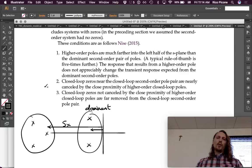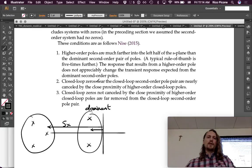Second condition is closed-loop zeros near the closed-loop second-order pole pair are nearly canceled by the close proximity of higher-order closed-loop poles. So, closed-loop zeros near the closed-loop second-order pole pair are nearly canceled by the closed proximity of higher-order closed-loop poles. So, if we had a zero here, this could screw things up for us. If you had a pole there, though, too, if it was close by, the net effect of those two, they nearly cancel. If they're right on top of each other, then they actually cancel. So,